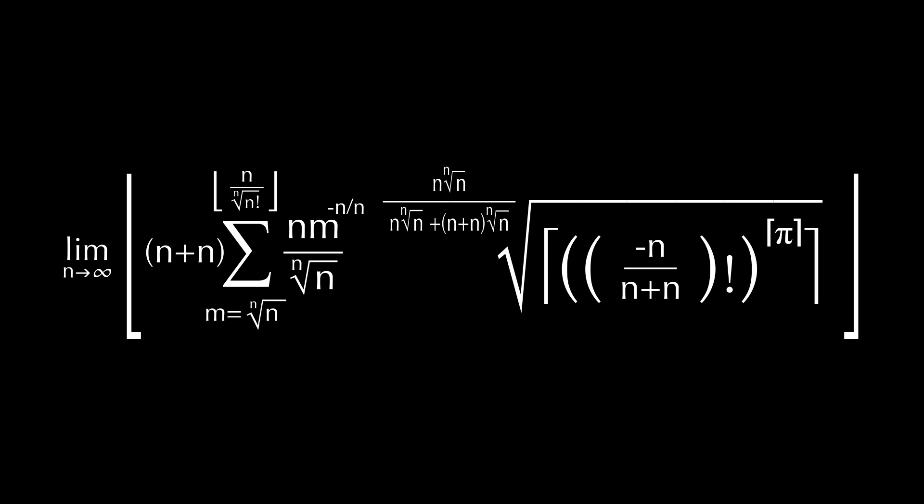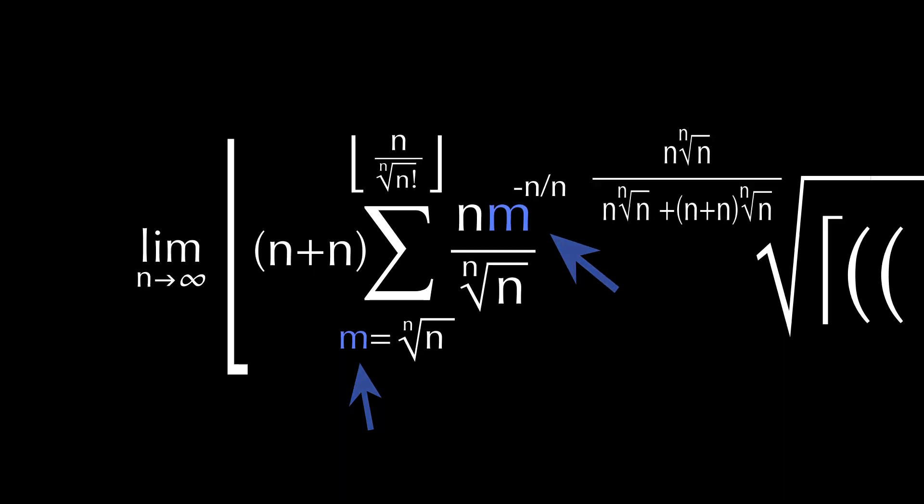The other thing you will notice about this evil equation is that not all terms involve the variable n. There is a pi here, and there is an m here. The m kind of cannot be avoided, otherwise I wouldn't be able to use this fun-looking sigma here. And I chose m because it resembles an n, and can kind of disappear in this mess.